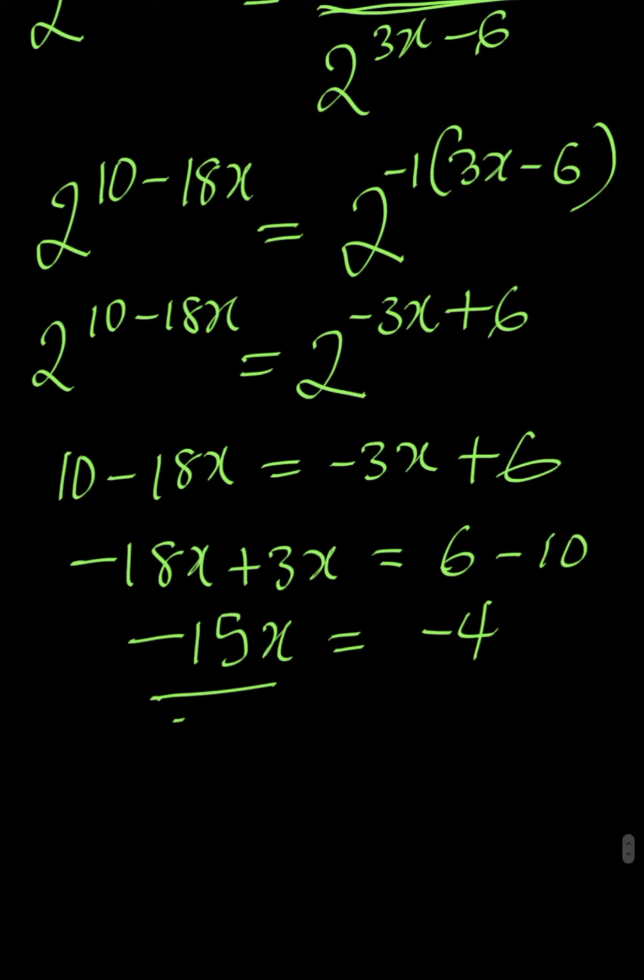So to get the value of x, divide everything by minus 15. This we cancel out. So x is 4 over 15 because minus will cancel out minus.